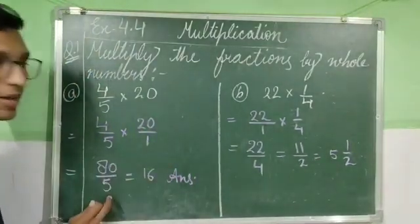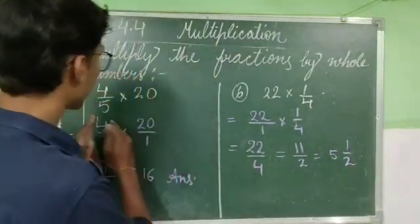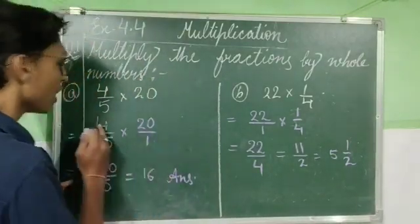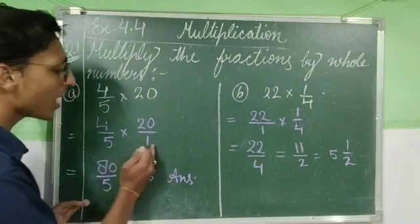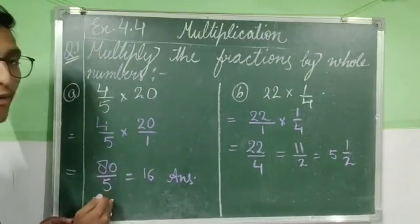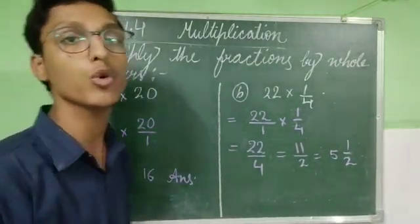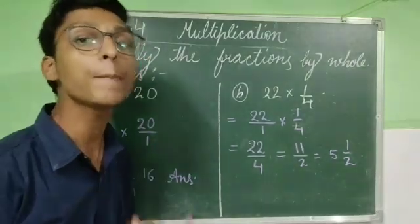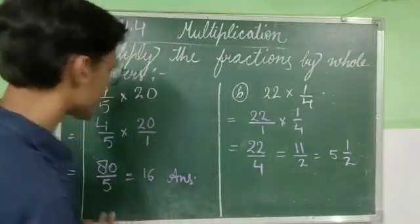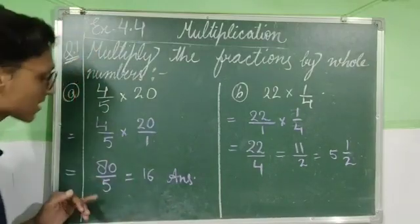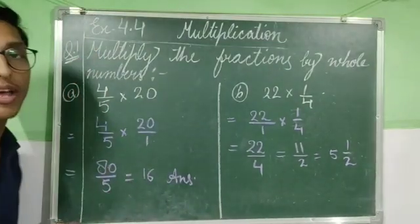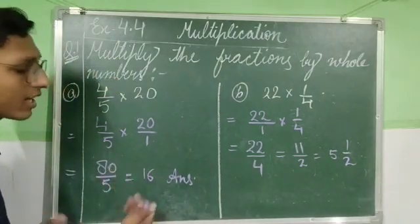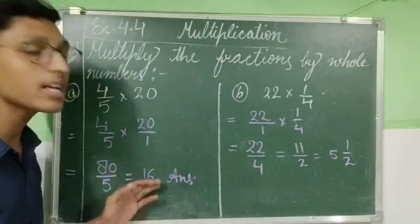We are doing multiplication numerator to numerator and denominator to denominator: 4 into 20 is 80, 5 into 1 is 5, giving us 80 by 5. Ab hum 80/5 ko dekhenge — yeh hamara improper fraction hai. 80 is a multiple of 5, so division works out simply. The answer is 16.